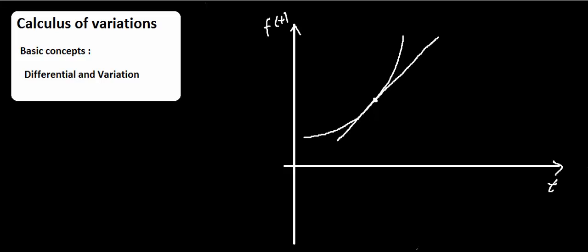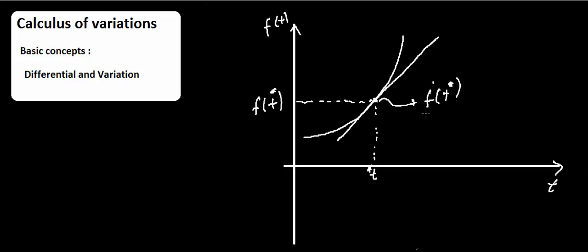Looking at this graphically: we have a curve representing the function f of t. The first derivative at a point is the slope. At point t*, the function value is f(t*), and f-dot(t*) represents the slope of the tangent line at that point.